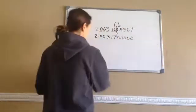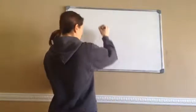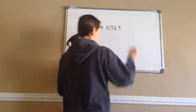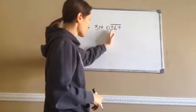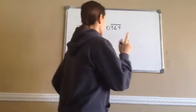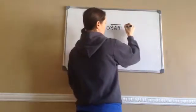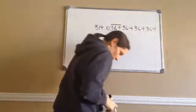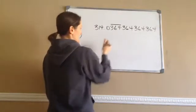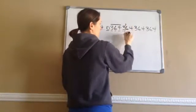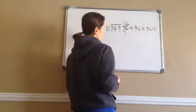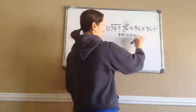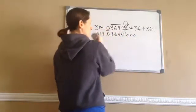This last one, really pay attention — they tell me to round 314.0364 with a line over the 364. That means this keeps repeating: 364, 364, 364. So I'm going to write out 364, 364, 364, 364 because that's what that means. Part A tells me to round it to five decimal places: one, two, three, four, five. Look to the right — yes, it is five or bigger — so this changes to four. Put zeros for everything else, and bring everything else down. That's A's answer.